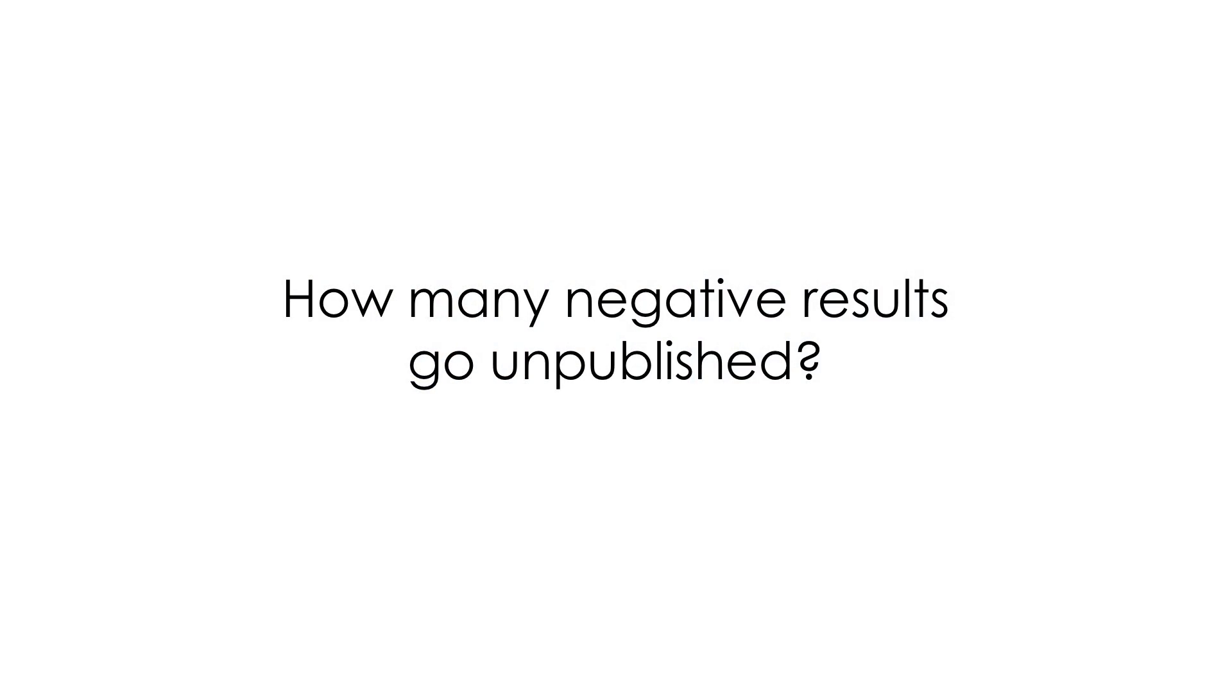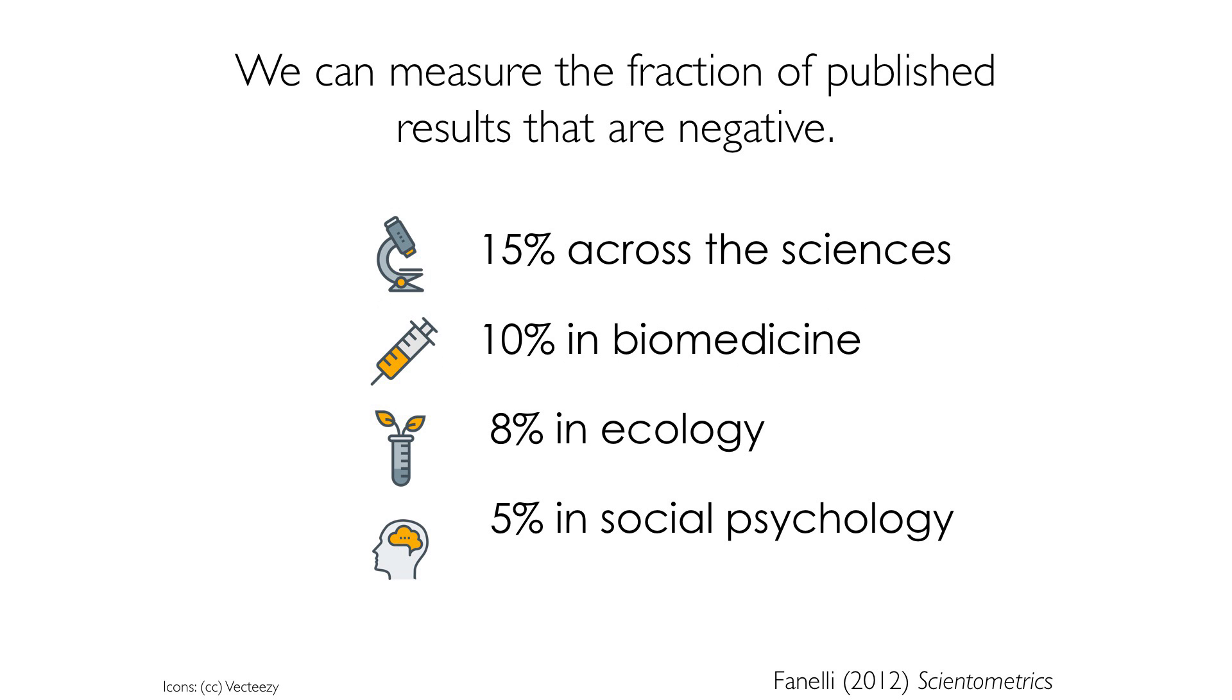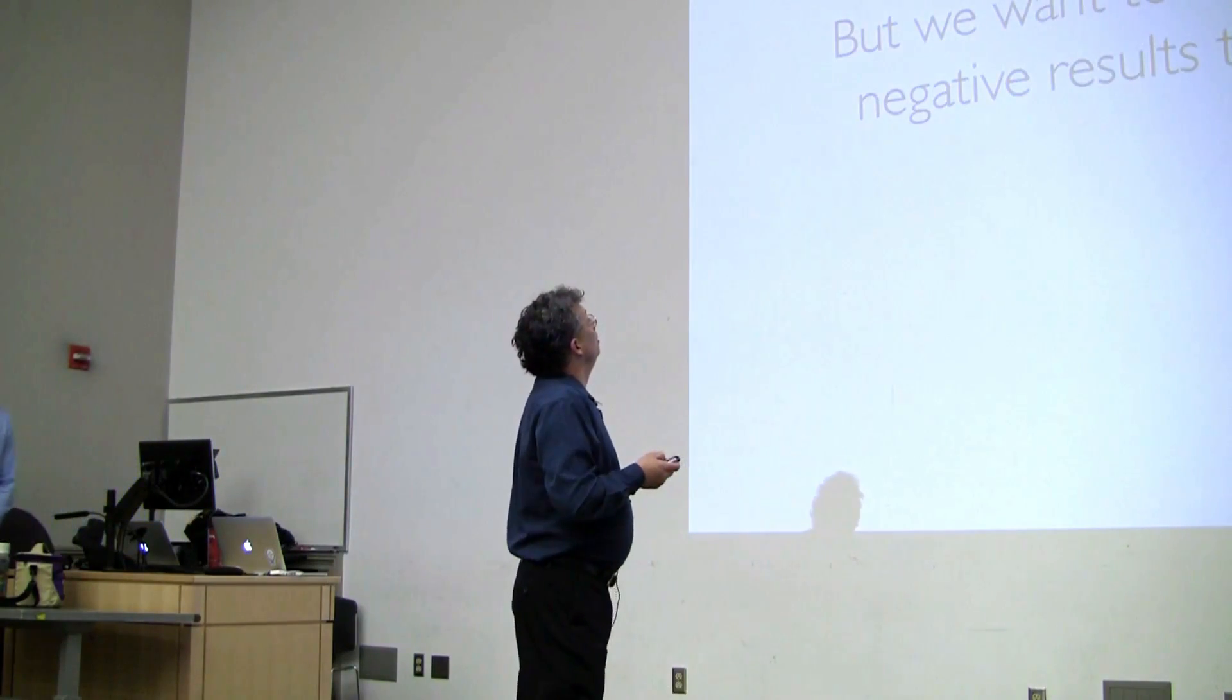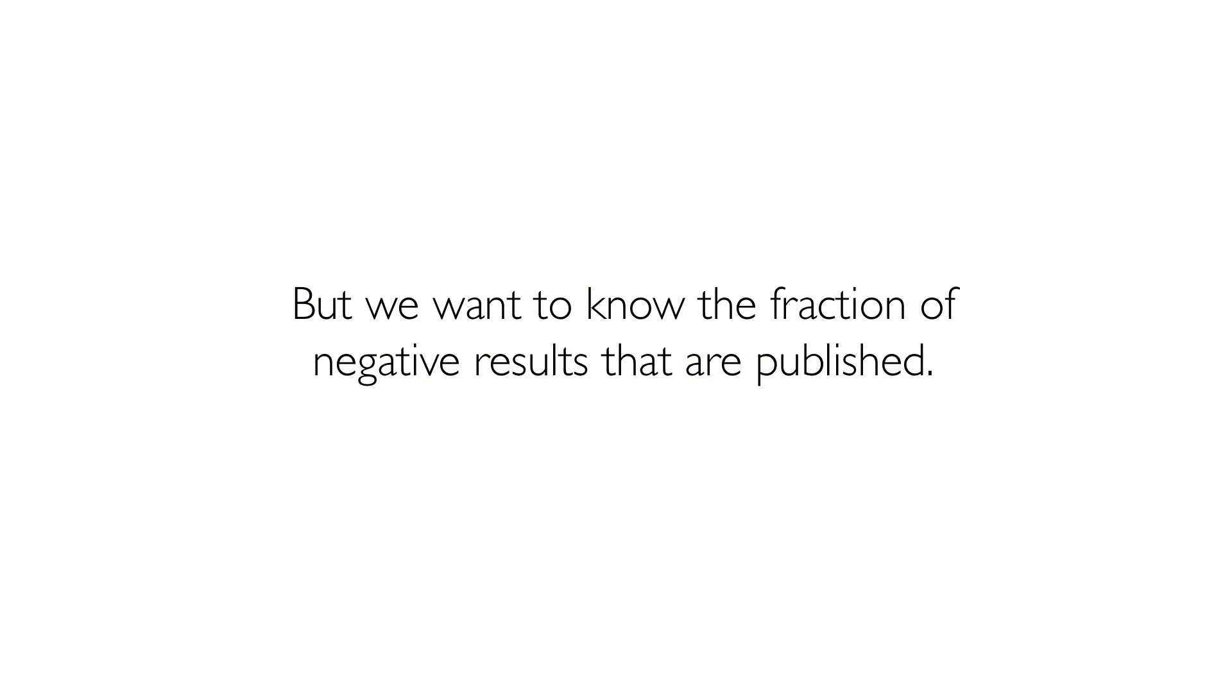So what we'd really like to know in order to be able to correct for this is how many negative results go unpublished. Well, the problem is we can measure the fraction of published results that are negative by just counting up negative results in journals. And so across the sciences, about 15% of the published results are negative. And that gets smaller and smaller as we move toward social psychology. In social psychology, only 5% of the published results are negative. It's boring. People don't publish that stuff. But what we really want to know is the fraction of negative results that are published. And that's a little bit harder to get at, because usually we don't know what's sitting in people's desk drawers.